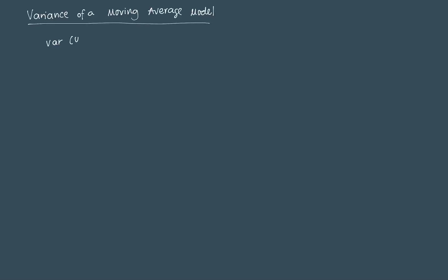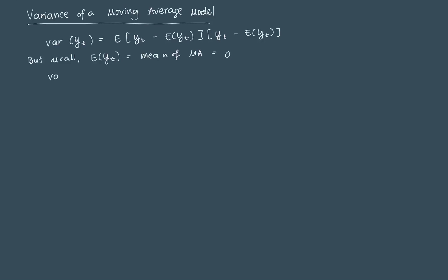Recall what we just had: the expected value of Yt, which is the mean of our MA model, is equal to zero. So this form reduces to Var(Yt) = E[(Yt - 0)(Yt - 0)], or simply E[Yt × Yt]. Now, what we do is plug in our model specification for Yt. So that's Var(Yt) = E[(Ut + Theta1 Ut-1 + Theta2 Ut-2 + Theta3 Ut-3)²].